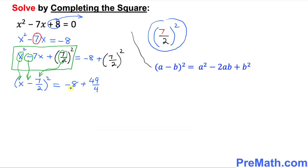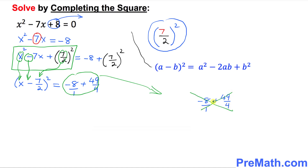To simplify the right-hand side, use cross multiplication: 4 times negative 8 gives negative 32, plus 49 times 1 gives 49, all over 1 times 4 equals 4. That gives us 17 over 4 on the right-hand side.